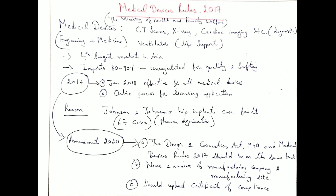A major reason behind the Medical Devices Rules was the Johnson & Johnson case — a US-based pharma company. It was not an implementation success; rather, it was a failure in the majority of cases, with 67 failure cases reported.